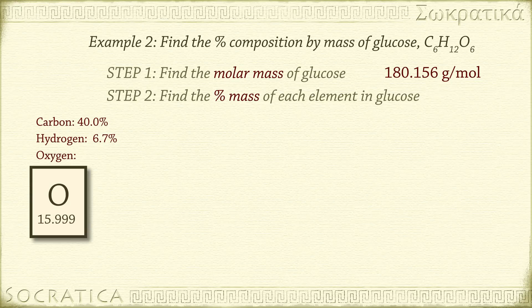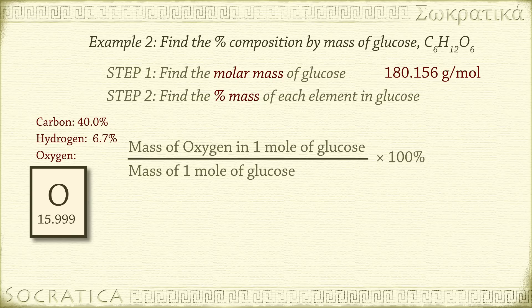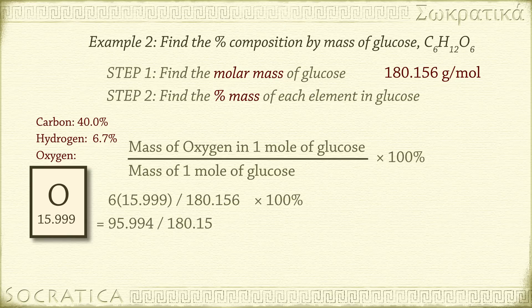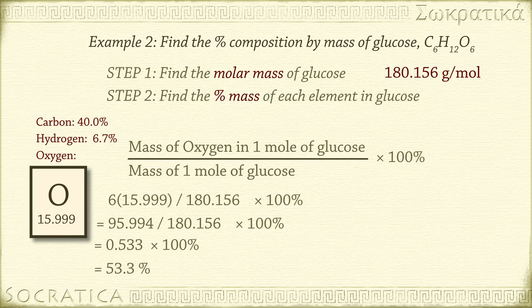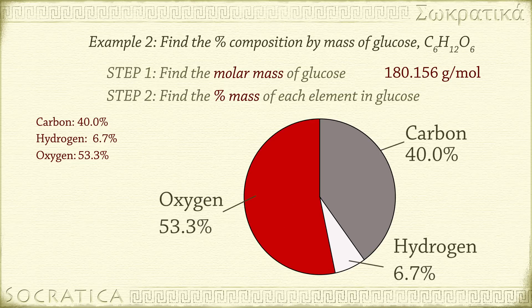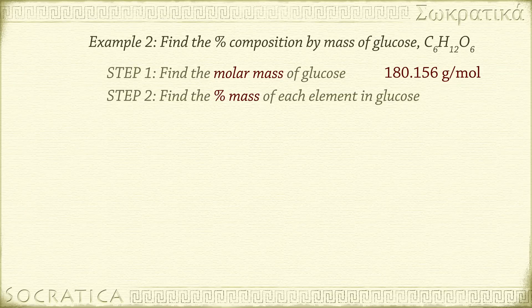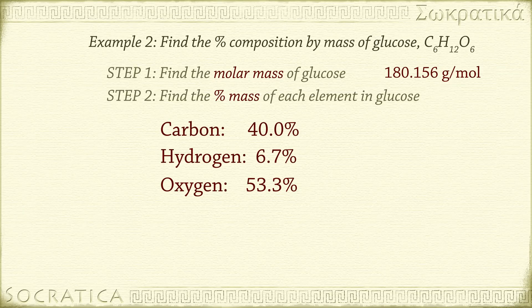And finally, the percent mass from oxygen. The mass of oxygen in one mole of glucose, divided by the molar mass of glucose, times 100%, is 6 times 15.999 grams, divided by 180.156 grams, times 100%, equals 95.994 grams divided by 180.156 grams, times 100%, equals 0.533 times 100%, equals 53.3%. Glucose is 53.3% oxygen by mass. Let's check: 40% plus 6.7% plus 53.3% equals 100%.